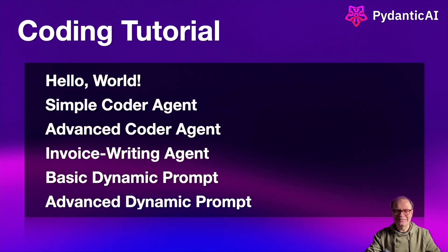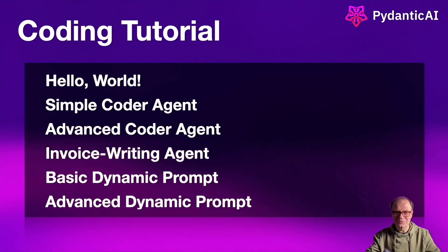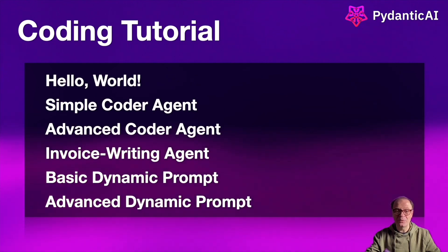Today we'll work on six examples, starting with a simple hello world, then moving to a basic code writing agent. Next, we're going to enhance the code writing agent through a much more comprehensive system prompt, demonstrating how critical it is to write descriptive prompts. We'll also see how to inject variables into static prompts in our invoice writing agent. The final two examples will teach us dynamic prompts, and the very last one has a twist — stick around to see how agents can write their own dynamic system prompts during runtime. By the end of these exercises, you will have enough practice to write your own system prompts with confidence.